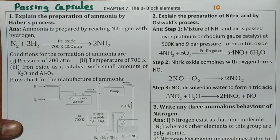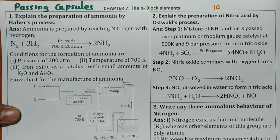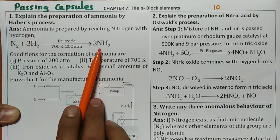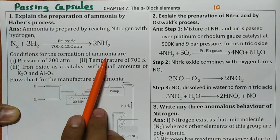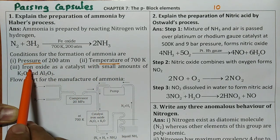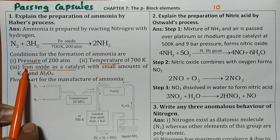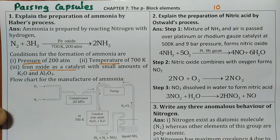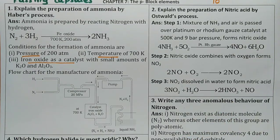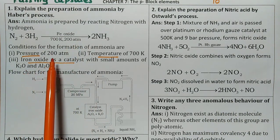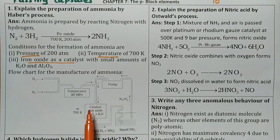First one explain the preparation of ammonia by Haber's process. When the question is asked like this first you write the reaction N2 plus 3H2 to give 2NH3. One mark they will give. Conditions for the formation: pressure, temperature, catalyst very important point. Pressure 200 atmosphere, temperature 700 Kelvin. Iron oxide act as a catalyst with small amounts of K2O or Al2O3. Then flow chart if they ask you how to write. Remember one mark for the reaction, one mark for temperature pressure and catalyst, one mark for the flow chart. Very important question. Practice this question.